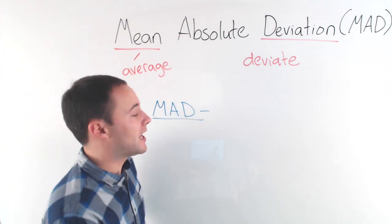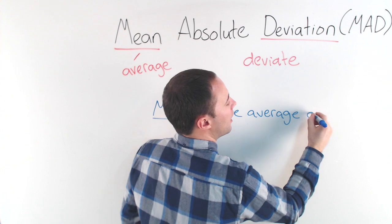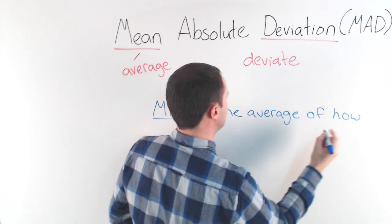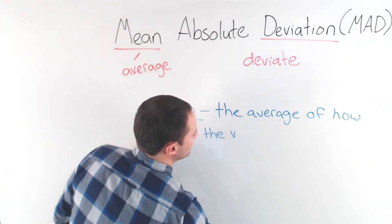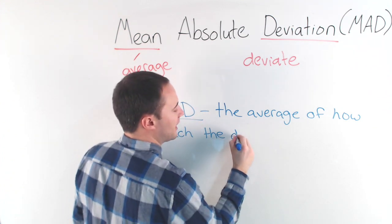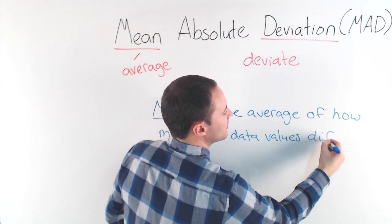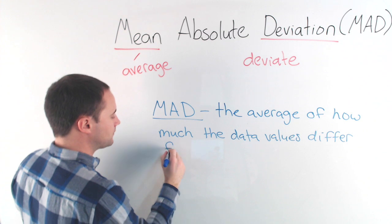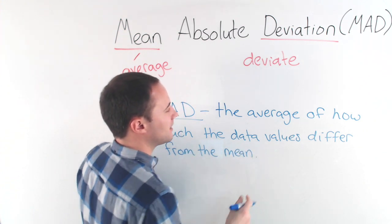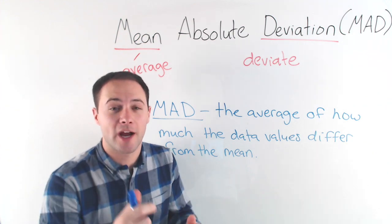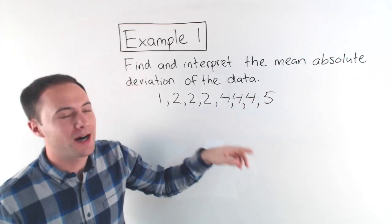With that in mind, the mean absolute deviation is just the average of how much the data values differ from the mean. Let's try our first example. Find and interpret the mean absolute deviation of the data.